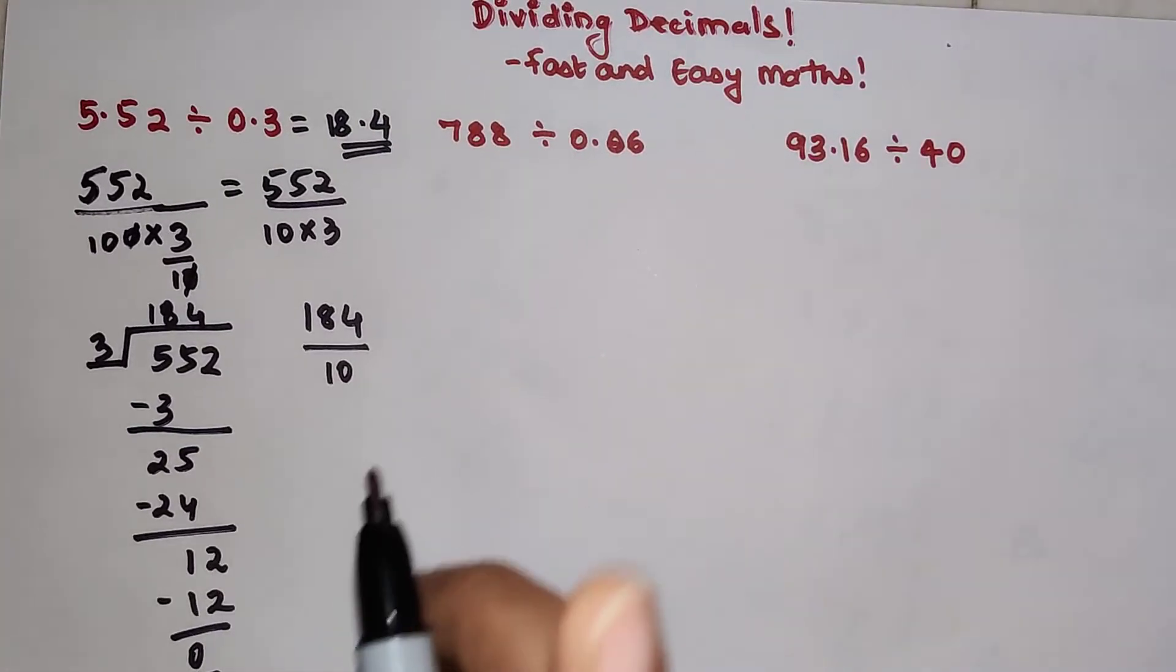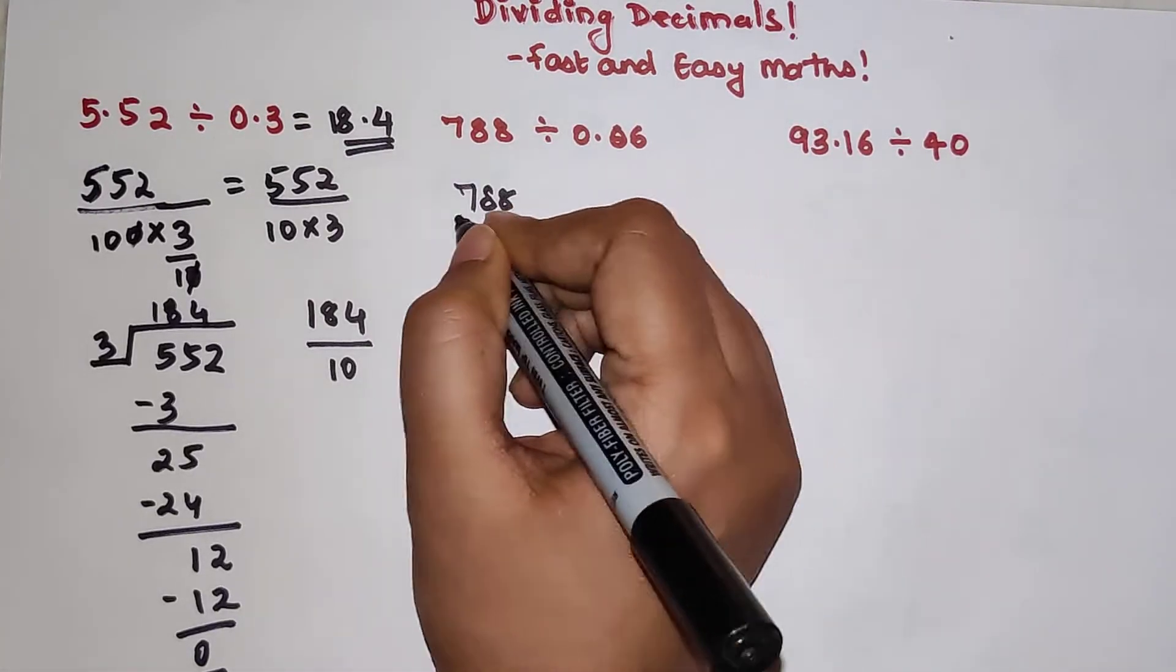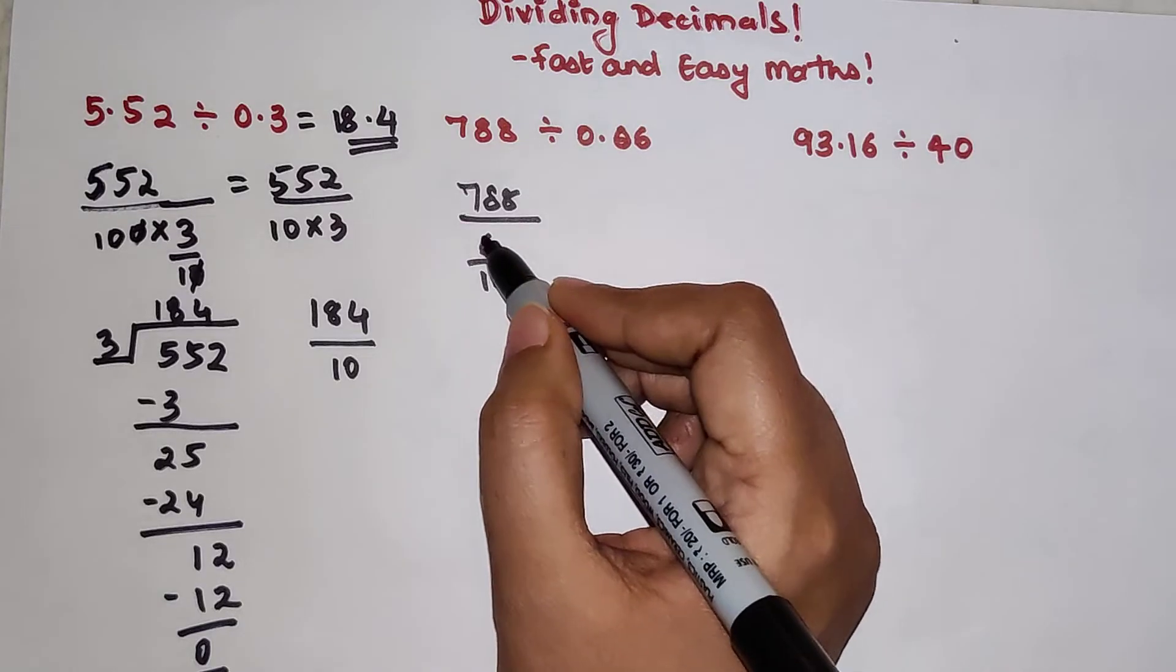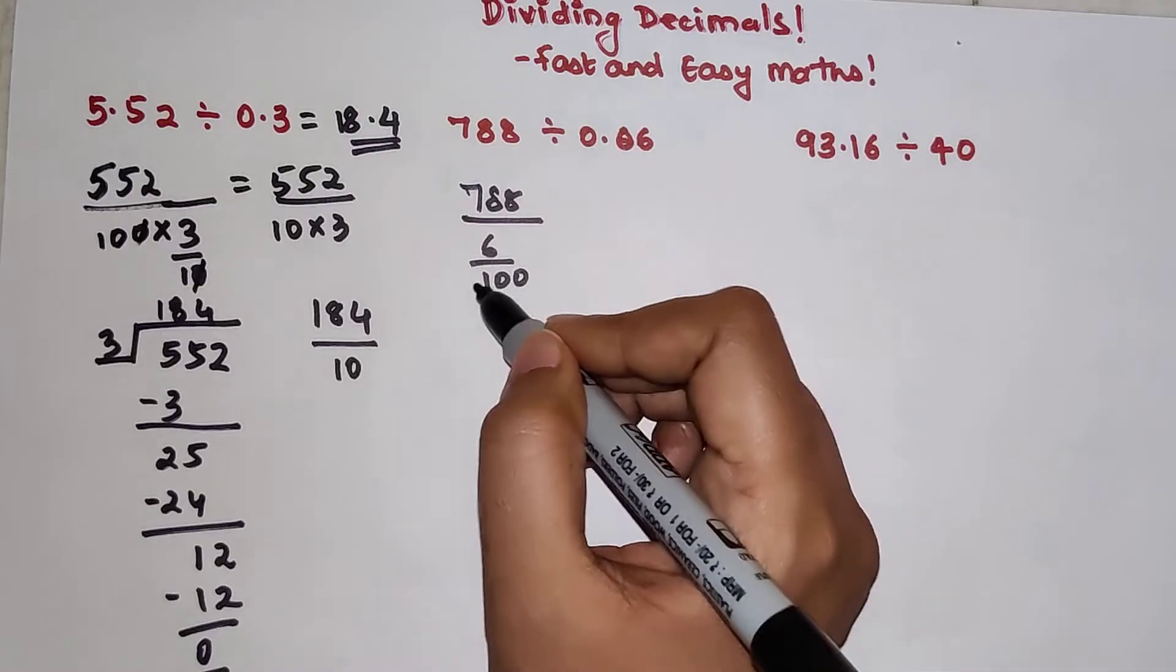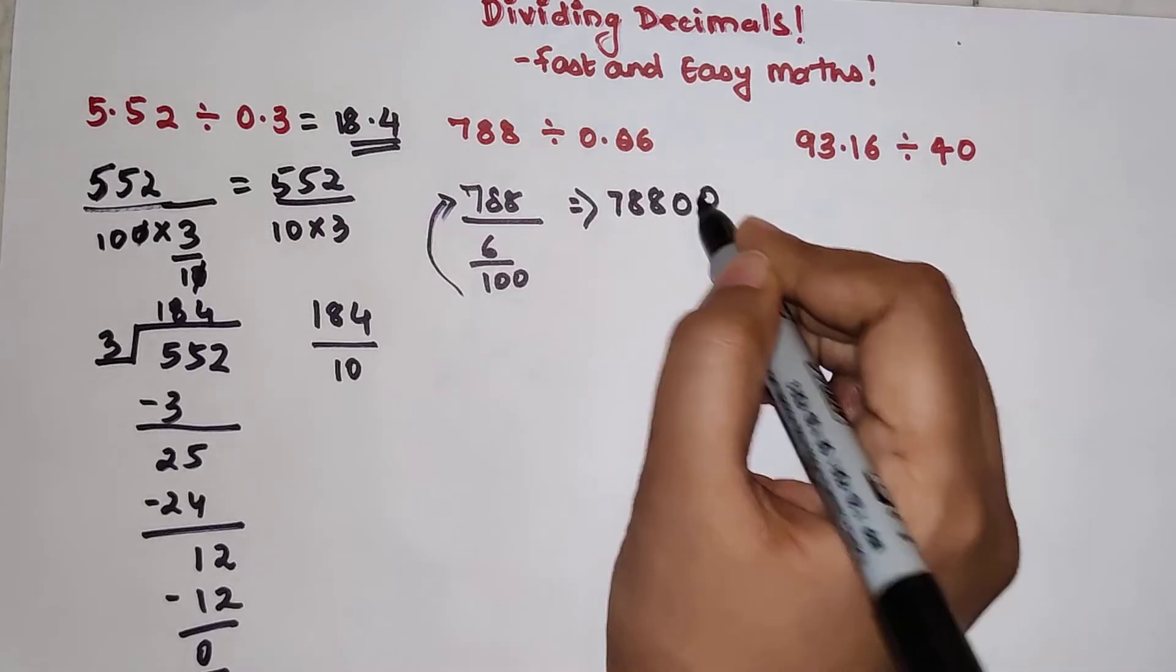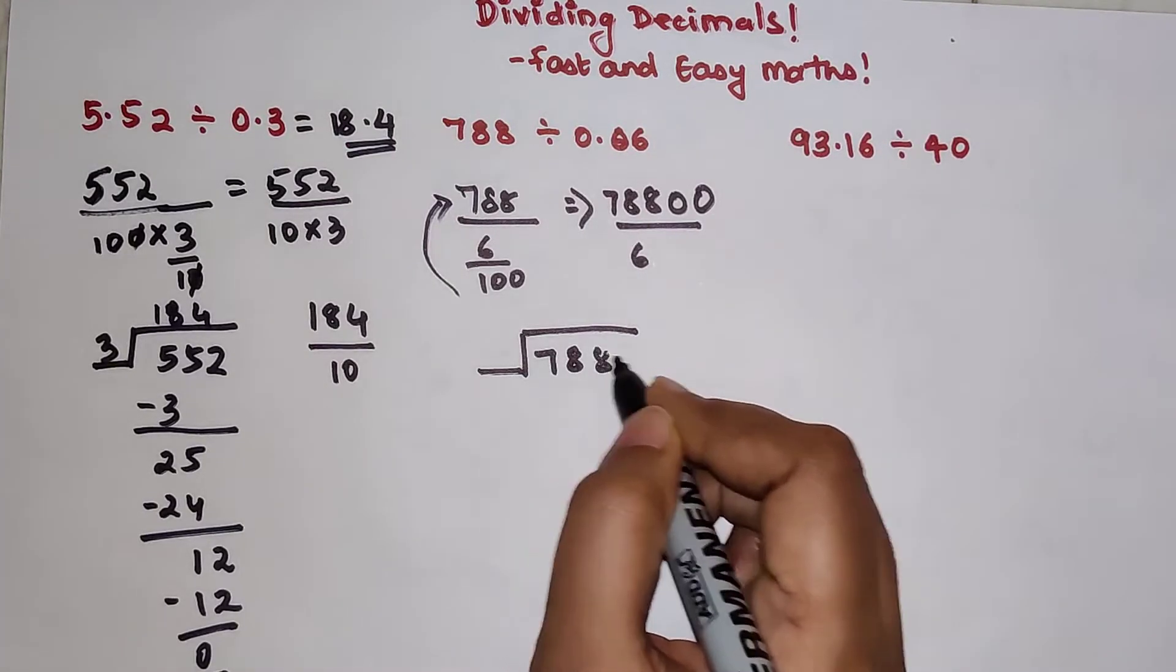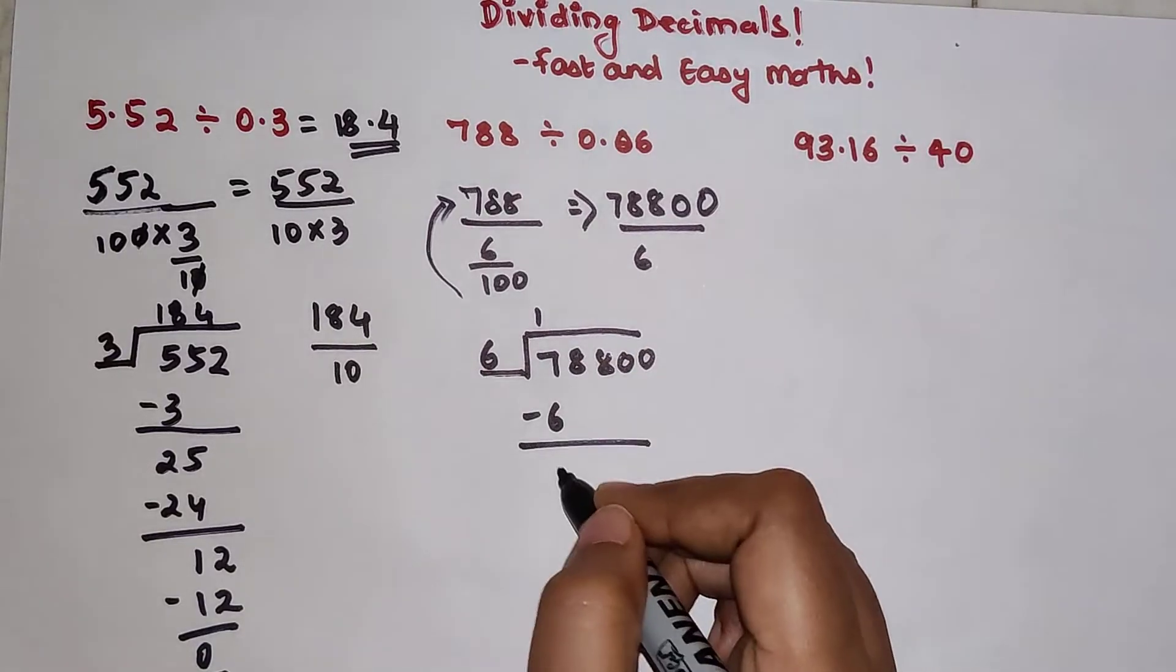Now this is 788 divided by 0.06. So this can be written as 6 upon 100. And we know that when you have a numerator and the denominator has a fraction, then the denominator in the fraction will go with the numerator. So this now changes to 78800 divided by 6.